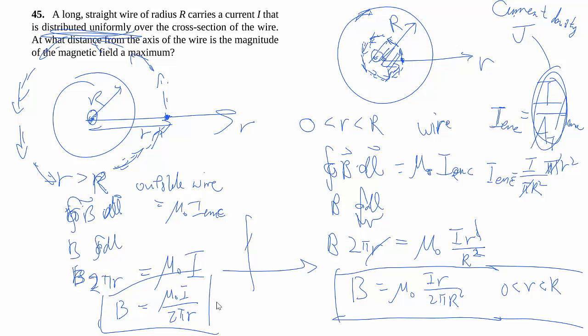So as it works out, your magnetic field B is a function of r, where big R is over here, it increases linearly to begin with. And then it starts to decrease slowly, as a 1 over r kind of way. So then the maximum, of course, is at r is equal to R. And that's the answer.